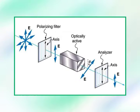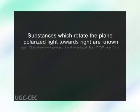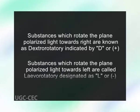When plane polarized light is passed through certain substances or their solutions, its plane of polarization is rotated either towards right or towards left by a certain angle. Those substances which rotate the plane polarized light are known as optically active, and the phenomenon is known as optical activity. Those which rotate the plane polarized light towards right are known as dextrorotatory, indicated by D or plus, and those which rotate it towards left are called levorotatory, designated as L or minus.